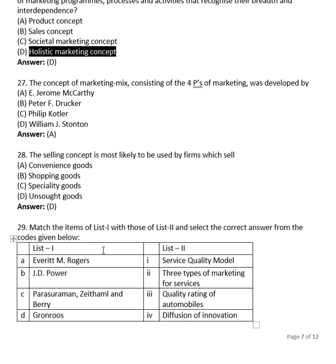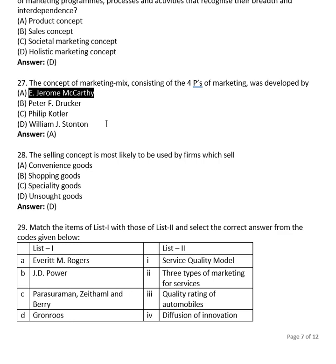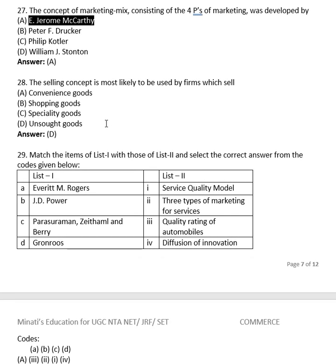Question 25: The concept of marketing mix consisting of the four Ps — product, price, place, promotion — and right now expanded to seven Ps including people, process, and physical evidence — was developed by McCarthy. So option (A) is the answer.